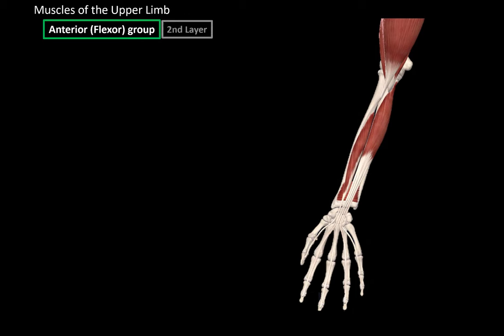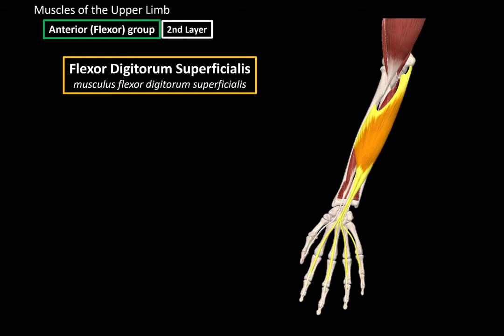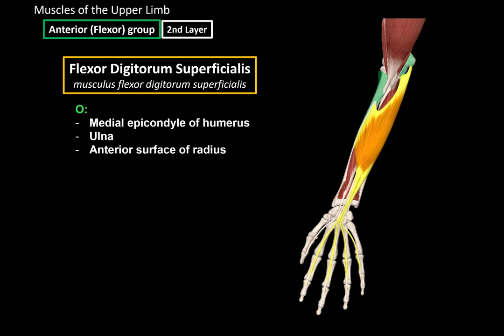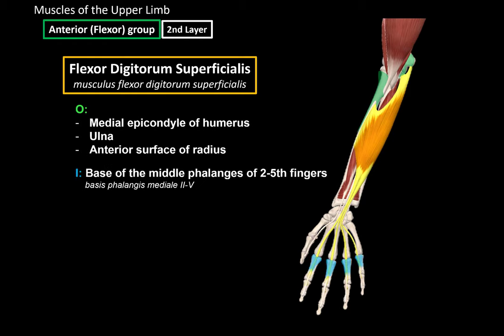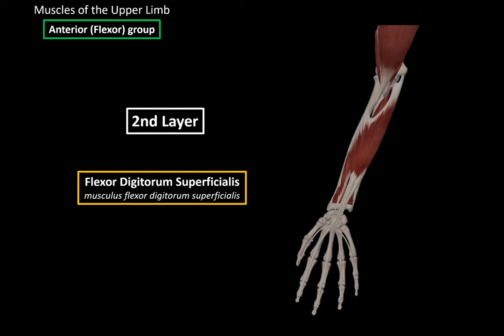Next we have the second layer, which consists of the flexor digitorum superficialis — this large muscle. It originates from the medial epicondyle of the humerus, the ulna, and the anterior surface of the radius, and inserts at the base of the middle phalanges of the second to fifth fingers. When it contracts, it flexes the second to fifth fingers at the metacarpophalangeal and proximal interphalangeal joints, and also helps with accessory flexion of the hand.